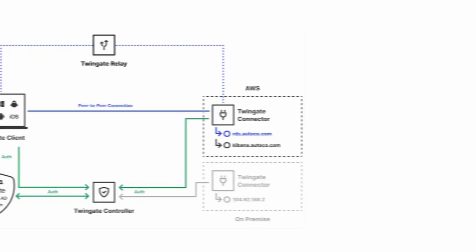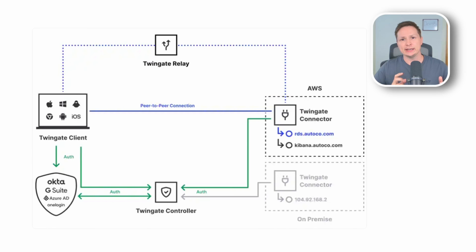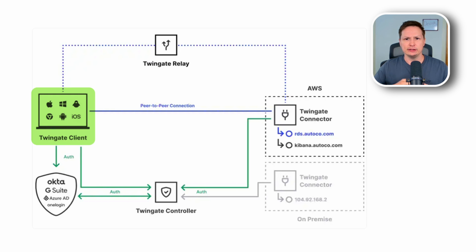In a moment I'm going to show you my lab setup and how you can get started with TwinGate. But first, let's diagram out what the TwinGate solution looks like and how network access is achieved. To get a basic TwinGate setup going you only really need to understand three components: you have the client, the connector, and the controller.